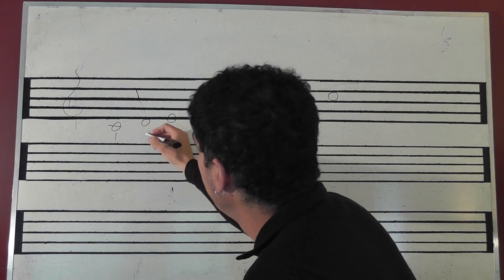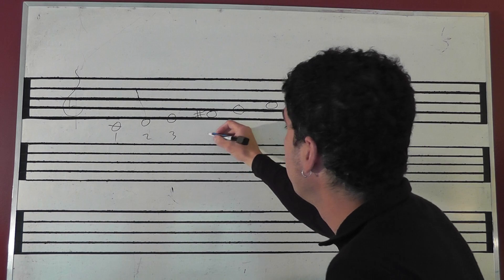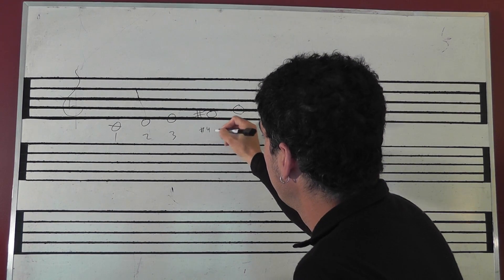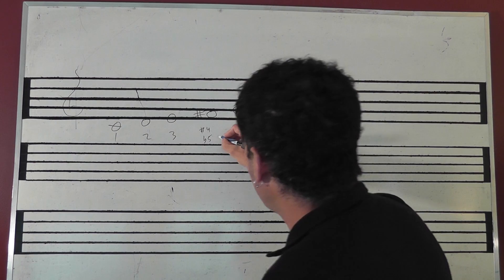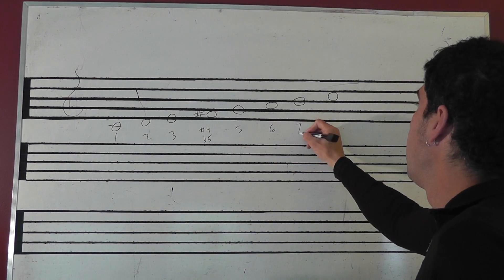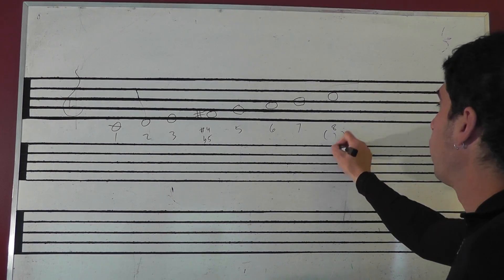So we've got 1, 2, 3, this would be either sharp 4 or flat 5, whatever you want to call it, 5, 6, major 7, and 8 or 1.